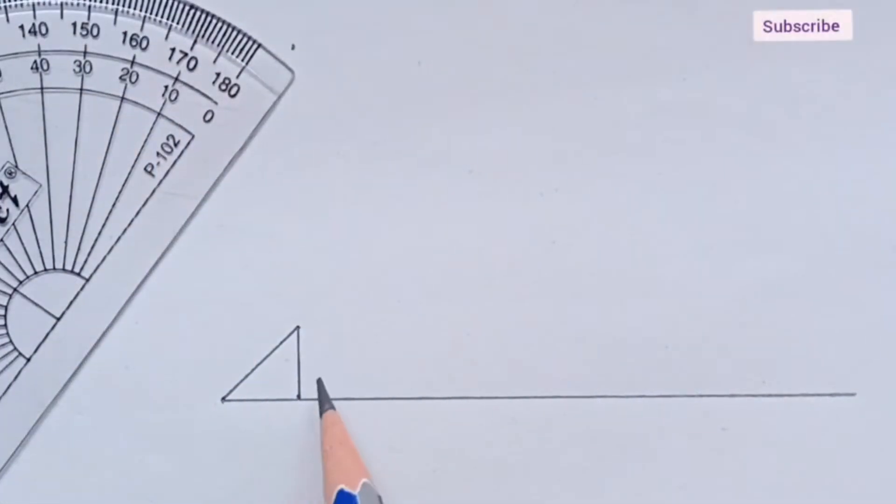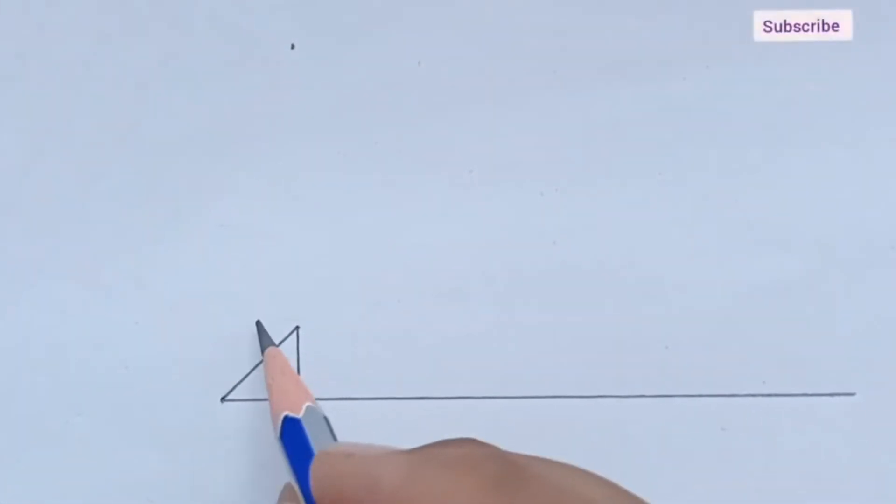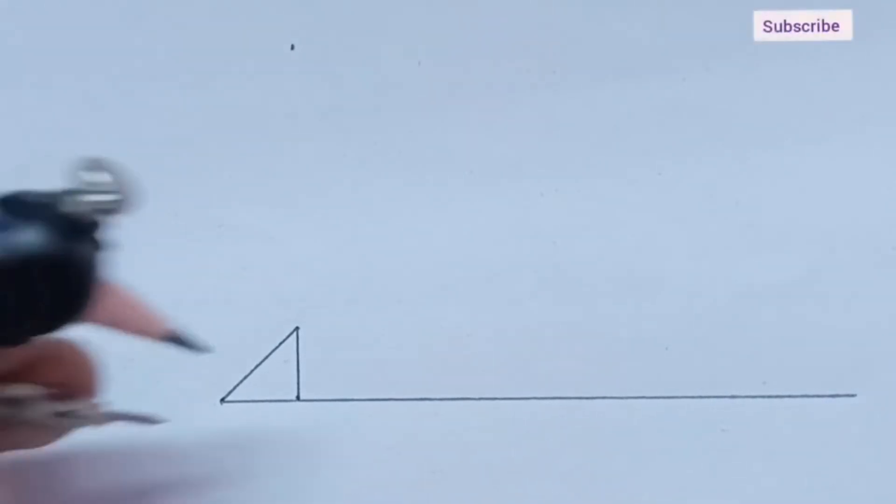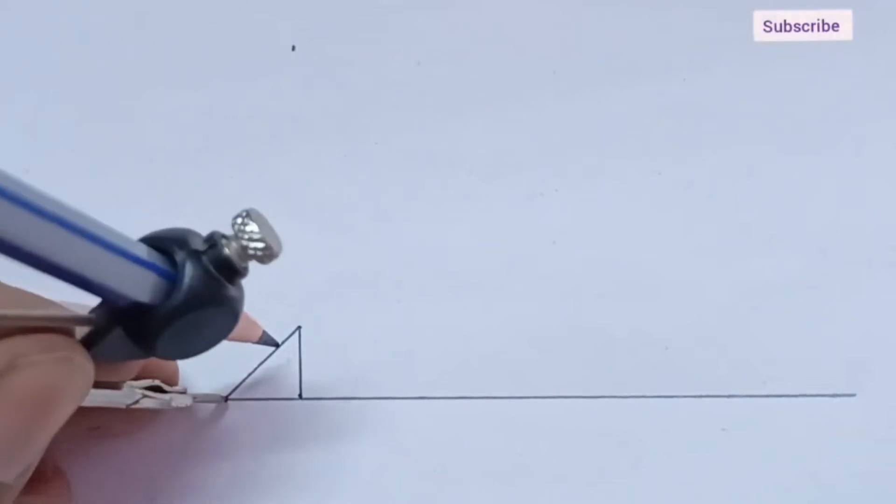This one 1 cm, this one is under root 2. So, we have to draw under root 2 on number line.